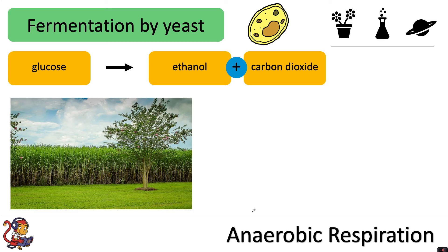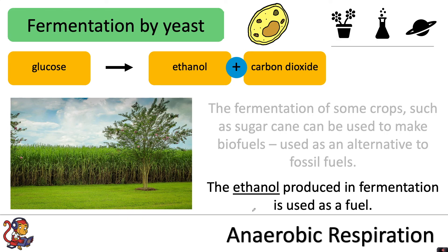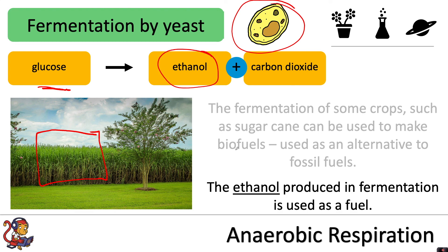As well as the alcohol and baking industries, fermentation by yeast can also be used in the production of some fuels. The fermentation of some crops, such as sugarcane, can be used to make biofuels used as an alternative to fossil fuels. The ethanol produced in fermentation is used as a fuel. They would harvest this crop, mix it with yeast, and the yeast would break down the sugar — the glucose — in the crop and turn that into ethanol and carbon dioxide. It's this ethanol which is used as a biofuel and can be used to power vehicles.